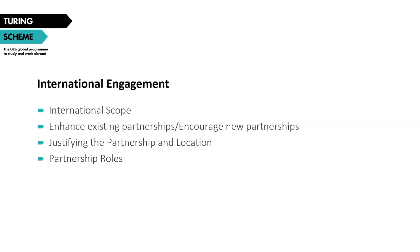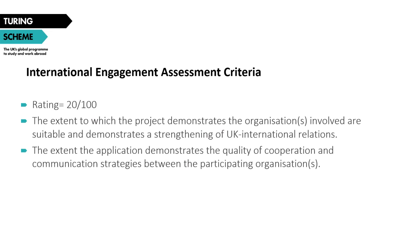The final question in this section is about responsibility of partners and how you will successfully engage with them to ensure project outcomes are met. This is where you discuss agreements with partners — there is no set Turing template for agreements, so it's up to you to establish appropriate ones. You should detail the process, talk about roles and responsibilities, how you will monitor the quality of your partnerships, and how you will communicate with your partners — how often and by what means. The International Engagement section is worth 20 out of 100.